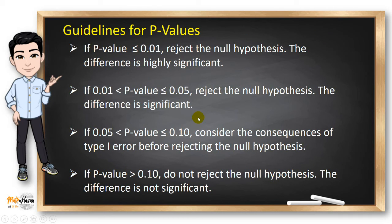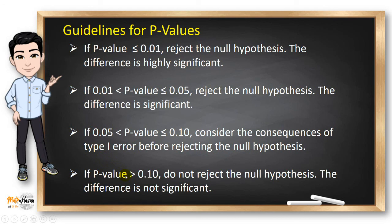Here are more detailed guidelines for the p-value method. If the p-value is less than 0.01, reject the null hypothesis and the difference is highly significant. If the p-value is greater than 0.01 but less than or equal to 0.05, reject the null and the difference is significant. If the p-value is greater than 0.05 but less than or equal to 0.1, you can still reject the null hypothesis, but you need to consider the consequences of a type 1 error. If the p-value is greater than 0.1, do not reject the null hypothesis and the difference is not significant.